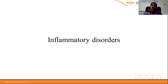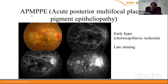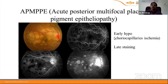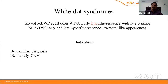In inflammatory disorders: APMPPE is characterized by early hypofluorescence and late staining, with possible pooling due to neurosensory detachment and a hot disc. The early hypofluorescence is attributed to choriocapillary ischemia. Among white dot syndromes, except multiple evanescent white dot syndrome (MEWDS), all others show early hypofluorescence with late staining. In MEWDS, early and late hyperfluorescence in a wreath-like appearance is seen. FFA indications in white dot syndromes: confirming the diagnosis and detecting CNV development.